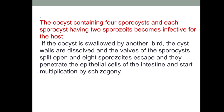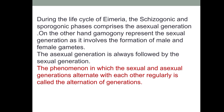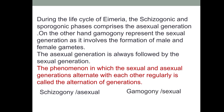When the oocyst is swallowed by another bird, the cyst walls dissolve, the walls of the sporocysts split open, and eight sporozoites escape. They penetrate the epithelial cells of the intestine and start multiplication by schizogony again. During the life cycle of Eimeria, the schizogonic and sporogonic phases comprise the asexual generation, while gamogony represents the sexual generation involving the formation of male and female gametes. The alternation of sexual and asexual generations regularly is called alternation of generations.